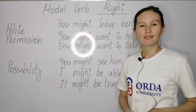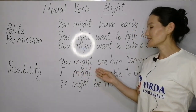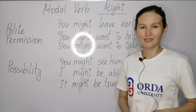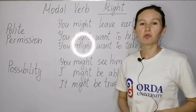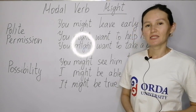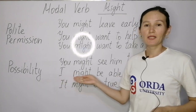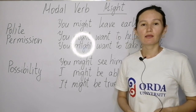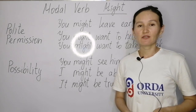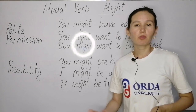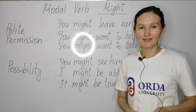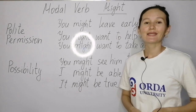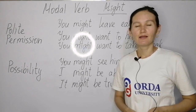Here we can see examples of possibility. 'You might see him tomorrow' — might plus 'see.' We can conjugate: you might see, she might see, I might see him tomorrow. Another example: 'I might be able to do that' — might plus bare infinitive 'be,' as in might be able to do that.